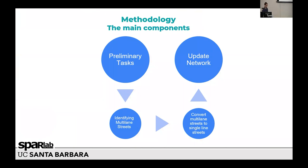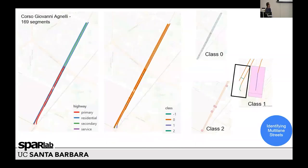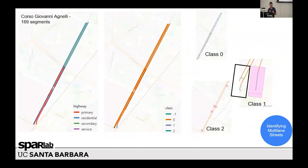The second component is to identify multi-lanes. All streets were grouped by their name. After that, we use DBSCAN to classify each group of segments that belong to the same street into classes based on their bearing.